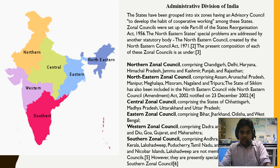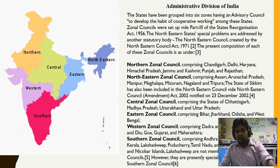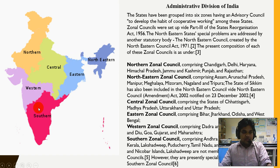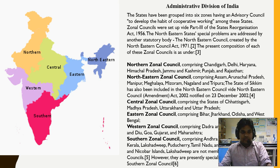This is the administrative division of India. This division was made in 1956 by the State Reorganization Act — we'll be talking separately about this act in a separate video. You can see in different colors the sections: the northern part, central part, eastern part, southern part, western part, and the northeastern part which we will be talking about today — so these are the six sections.